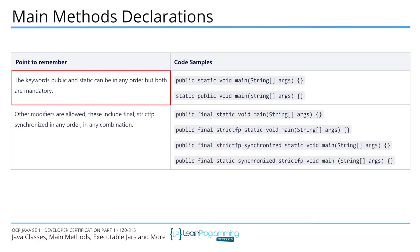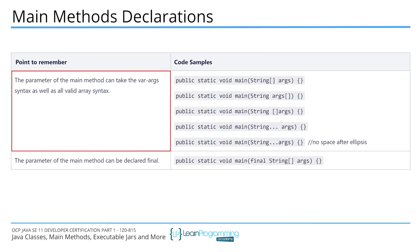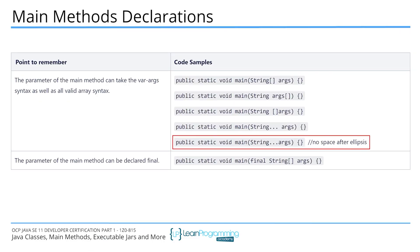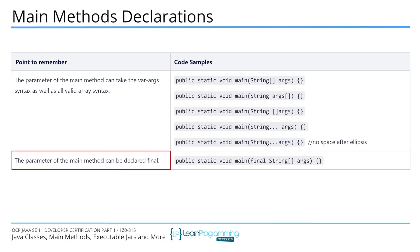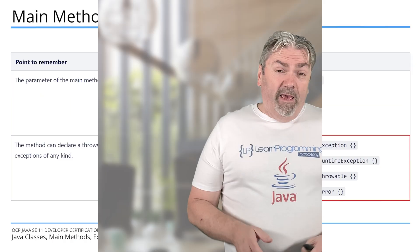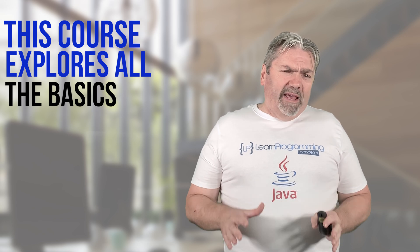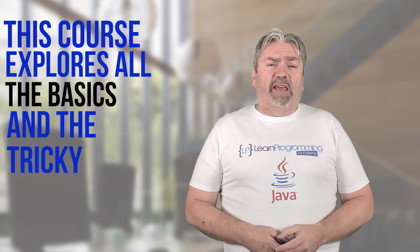As an example, did you know that there are 20 versions of the main method declaration in Java? Who would have thought that public static void main has so many different forms? Because of things like this, even experienced Java developers can get trapped, and this is where this course comes into play. It explores all the basic and the tricky stuff so that you can go into the exam fully prepared for anything.